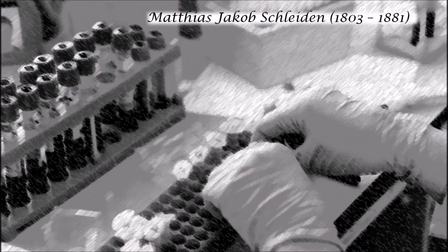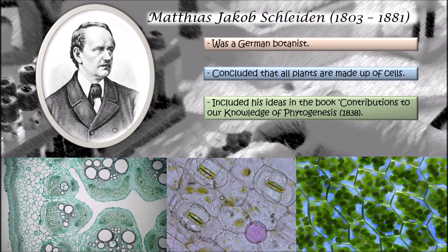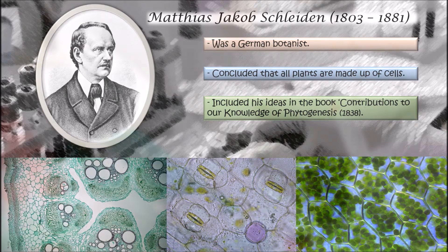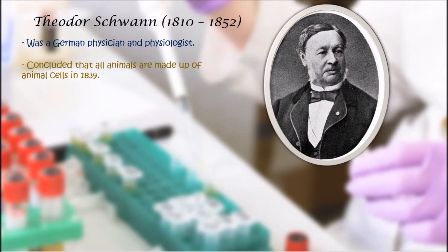Matthias Schleiden was a German botanist who studied plant structure under a microscope and concluded that all plants are made up of plant cells. He published his ideas in 'Contributions to Our Knowledge of Phytogenesis' in 1838, when he was a professor of botany at the University of Jena.